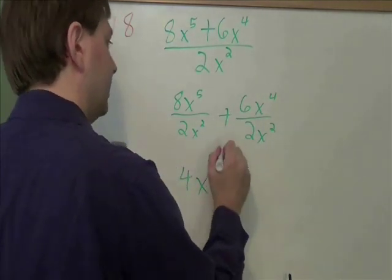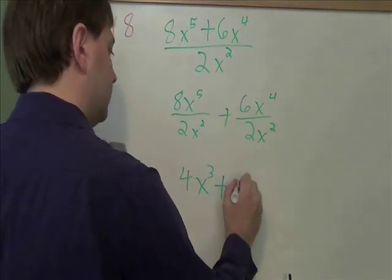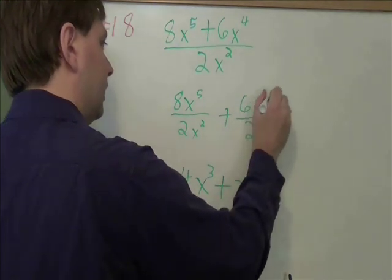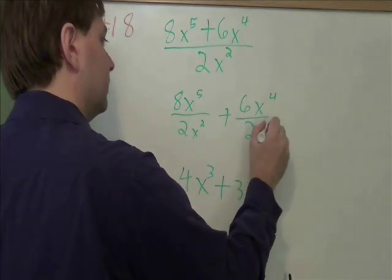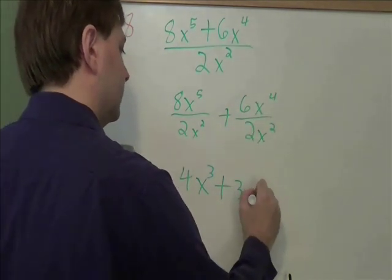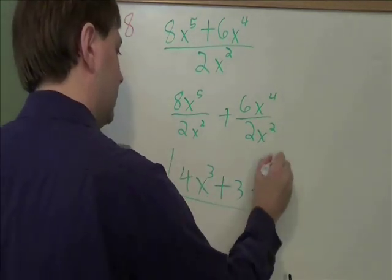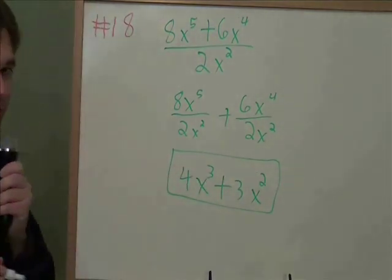The plus symbol will stay right there in the middle. 6 divided by 2 is 3. x to the 4 divided by x to the 2, 4 minus 2 is 2. And that is as simple as that we'll get. And that's problem 18.